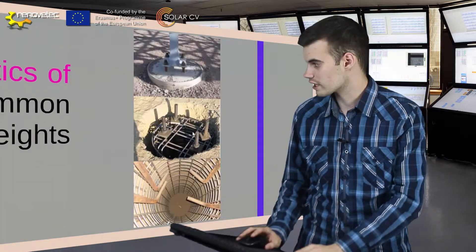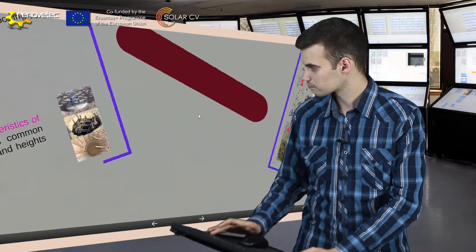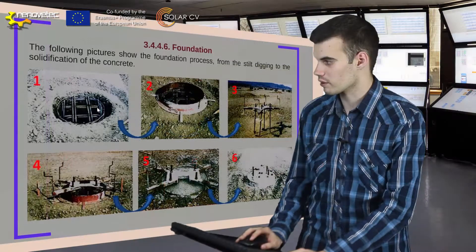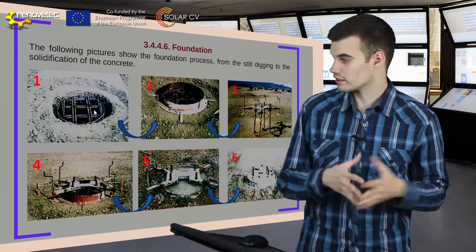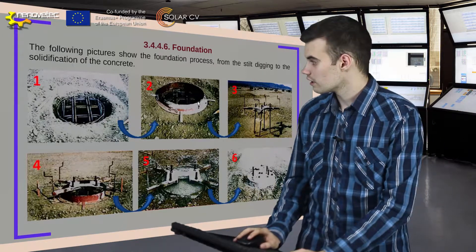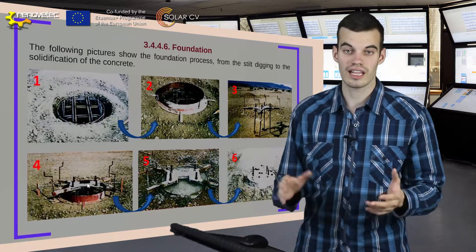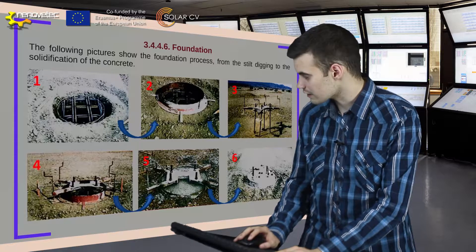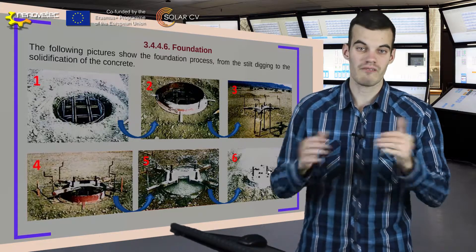Here we can see an example of the steel. Here we can see the final process of the foundation: in the first picture we can see the steel when there is nothing placed yet, then we are locating the iron elements, and finally we have the iron bars where the piles are going to be fixed.